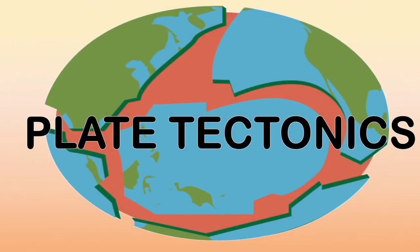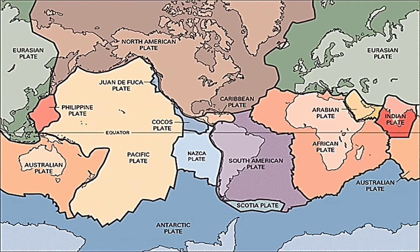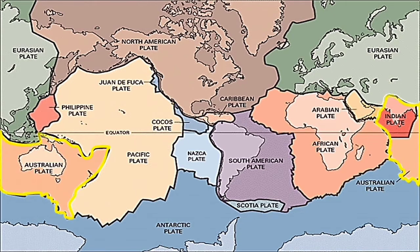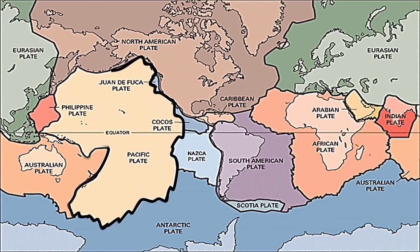The Earth has small and large plates. There are seven relatively large plates and several smaller ones, including the Philippine plate. These include the African plate, Antarctic, Eurasian, North American, South American, Indo-Australian, and the Pacific plates.